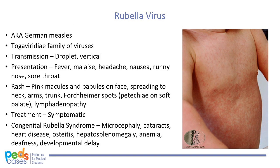Secondly, the rubella virus, sometimes called German measles or third disease, is from the togaviridae family of viruses. Transmission is droplet or vertical — from mom to baby — and there is an incubation period of 12 to 25 days after exposure. There is a one to five day prodrome which can include fever, malaise, headache, nausea, runny nose, and sore throat. When the exanthem appears afterward, it starts as irregular pink macules and papules on the face, which spreads to the neck, arms, and trunk. The rash usually lasts three days. Pinpoint petechiae involving the soft palate can also occur, called Forchheimer spots. Lymphadenopathy involving the suboccipital and posterior auricular nodes can also occur with a rubella infection.